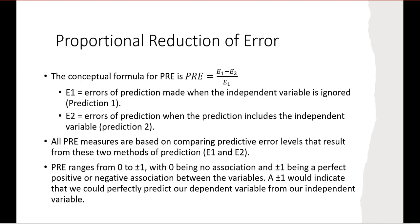The conceptual formula for PRE is (E1 minus E2) divided by E1, where E1 is the errors of prediction when the independent variable is ignored, and E2 is the errors of prediction when the independent variable is included. All PRE measures compare these two levels of predictive error. PRE ranges from 0 to plus or minus 1, with 0 being no association and plus or minus 1 being a perfect positive or negative association — meaning we could perfectly predict the dependent variable from the independent variable.